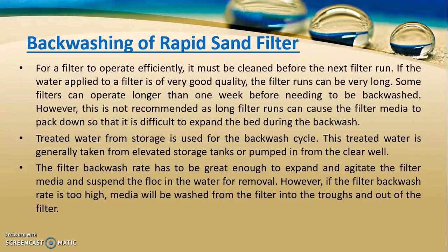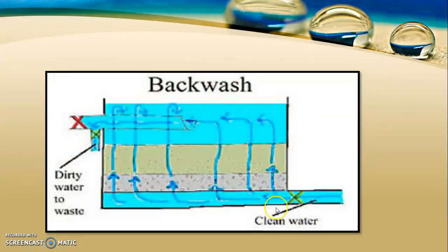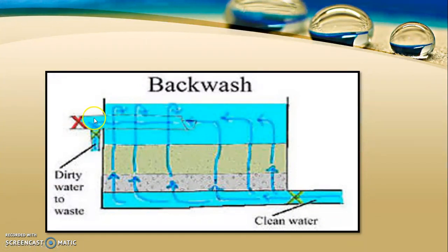Back washing is the process of passing water in the reverse direction to clean impurities that are clogged in the filter beds. The contaminated water collected from the top surface is collected in the wash water troughs. Clean water is made to pass in reverse so that impurities present inside the pores of the filter beds are removed by water pressure and collected in the wash water troughs. Along with the water, compressed air is also passed so that more of the clogged impurities can be removed.